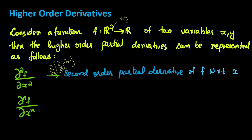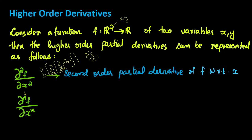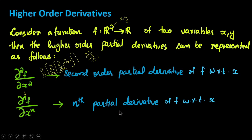We can find any number of derivatives in this way. Taking the derivative once more gives ∂³f/∂x³, and so on. In general, ∂ⁿf/∂xⁿ is the nth order partial derivative of f with respect to x.